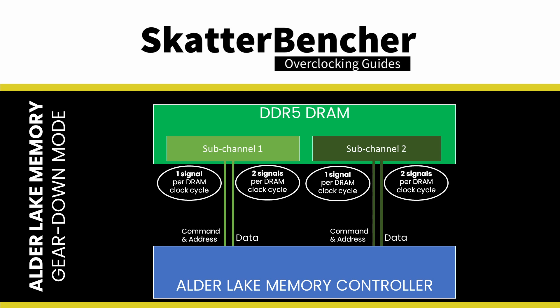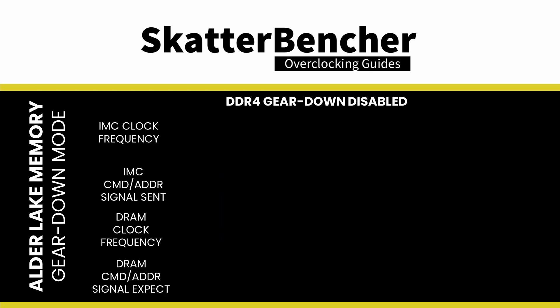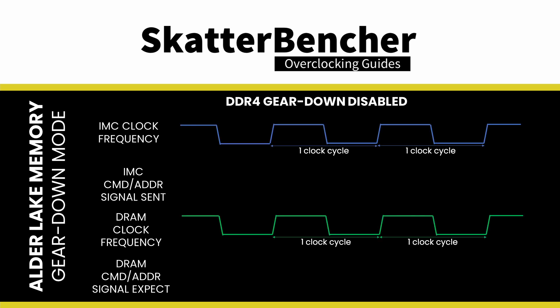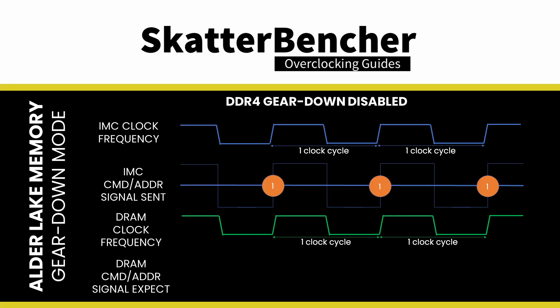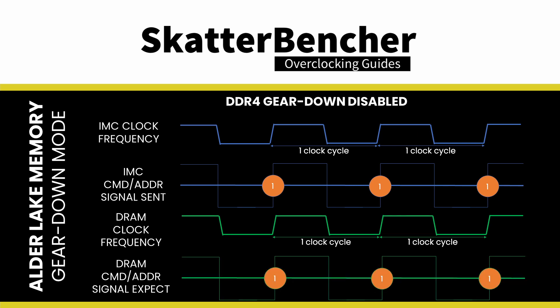With DDR5, things are a little different than with DDR4, so let's first review how Gear Down mode worked on DDR4. As the command address bus is the main communication bridge between the memory controller and the system memory, their operating frequencies are usually synchronized. That means the memory controller and memory operate at the same frequency. In normal operation with DDR4, every clock cycle there is one command address signal sent from the memory controller to the memory, and the memory also expects one signal per clock cycle.